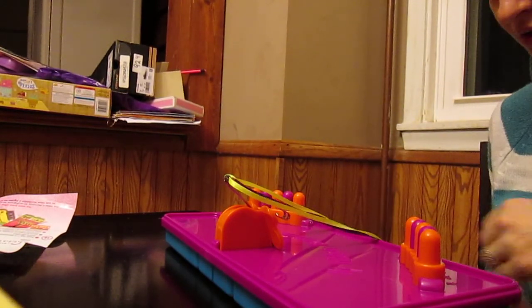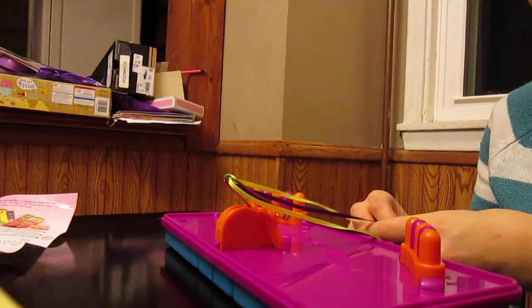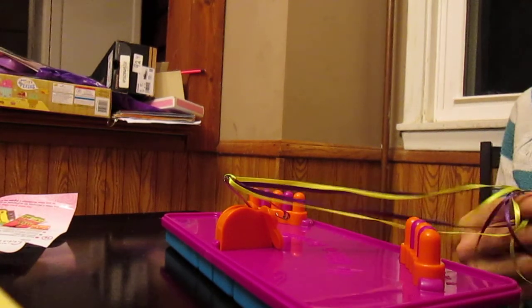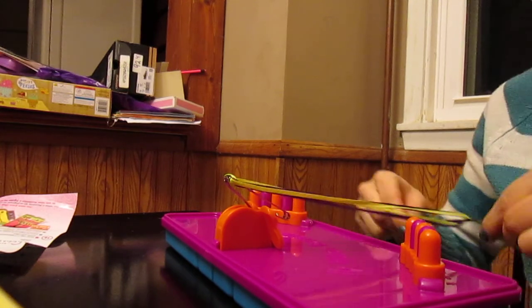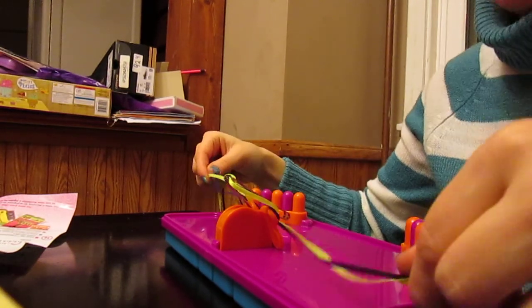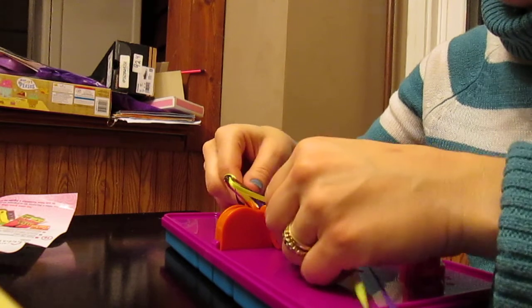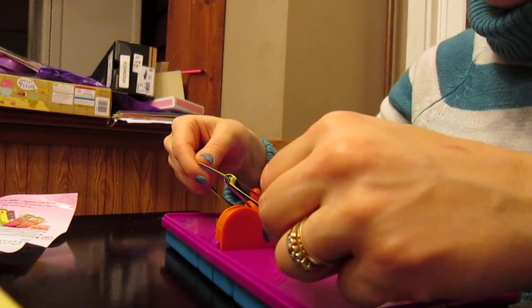It would be best to do a double knot here so that it can stay in place and you make sure you're going under the top of the barrette so that the knot is underneath it.